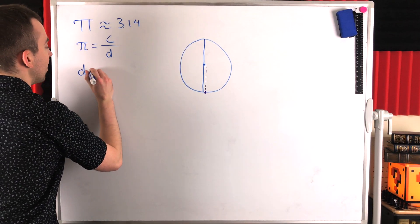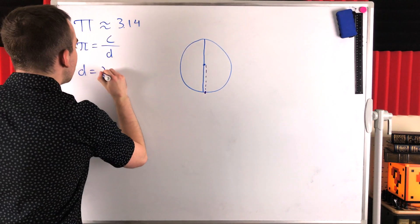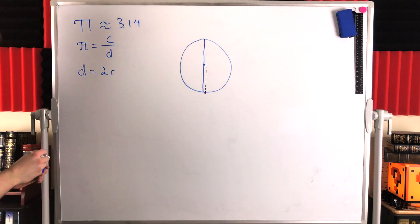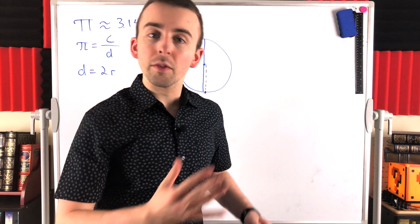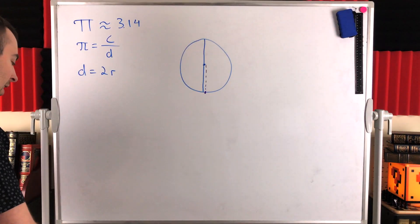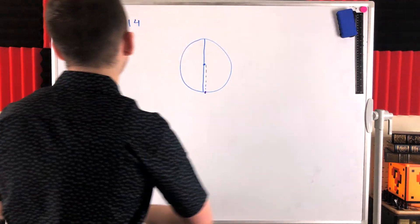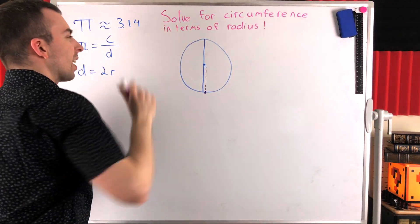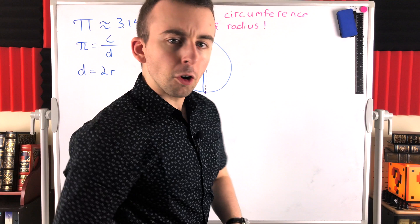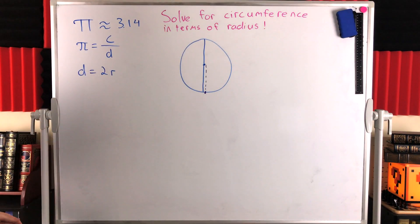So another way we might write that is that the diameter, d, is equal to two times the radius. Now with this information, we can solve all of these basic circle problems. So we want to find now the circumference from the radius. So that's the objective: solve for the circumference in terms of the radius. We just need to work with these equations.